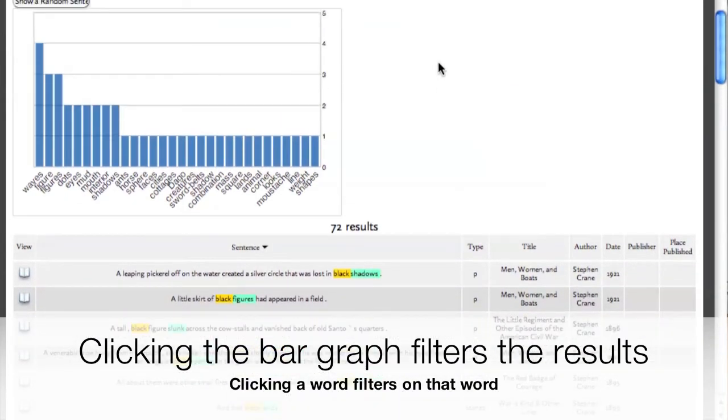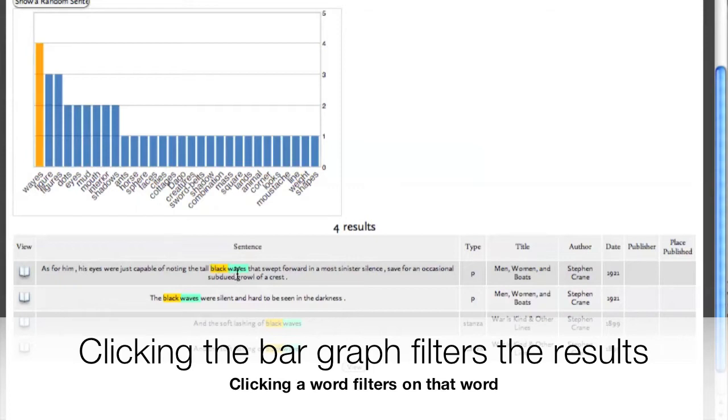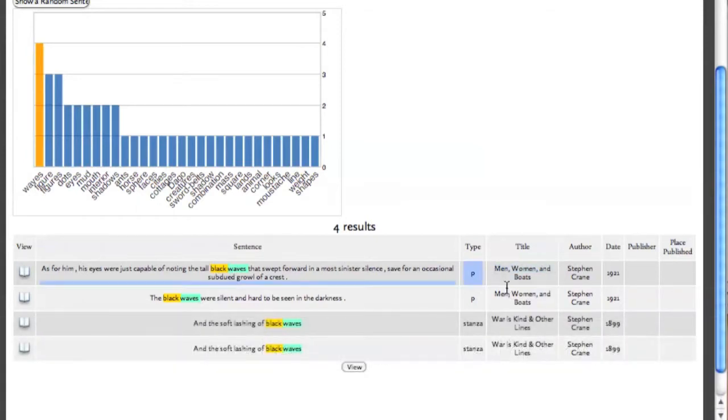Additionally, I can use the bar graph to filter the list of search results. For example, clicking on the word waves filters the search results to the four sentences in which black is used to describe waves.